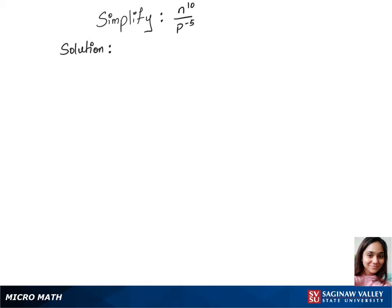To simplify n power 10 over p power minus 5, we will use the negative rule of exponents. Let's write the question in the form n power 10 times 1 over p power minus 5.